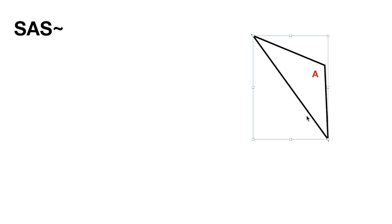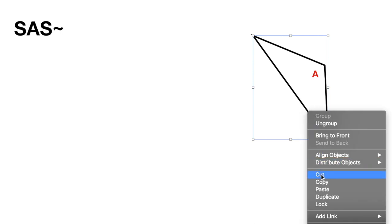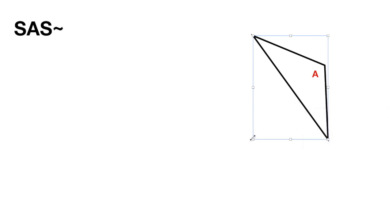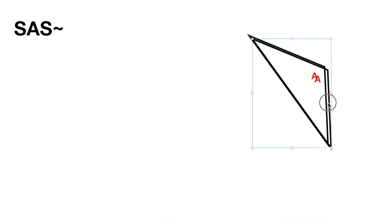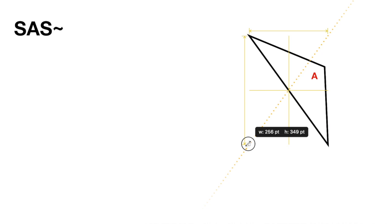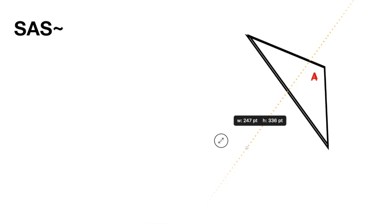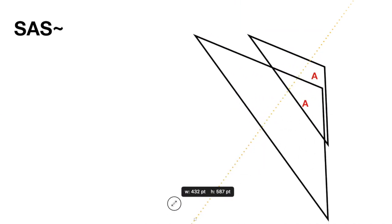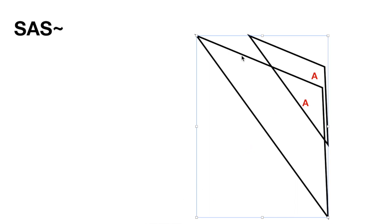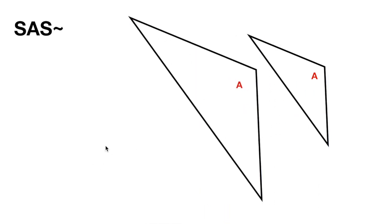I'm going to take this triangle right here and copy it so we have another one. I'm going to copy and paste it, so there we have two of the original triangle placed on top of each other. Then I'm going to enlarge it — dilate it so every side is proportionally larger. So now we have two triangles that are similar to each other.